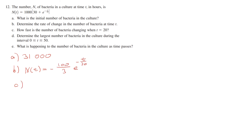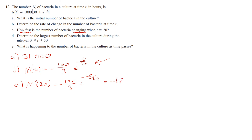For part c, how fast is the number of bacteria changing when t equals 20? Using the rate of change formula, plug in t equals 20: N prime of 20 equals negative 100 over 3 times e to the power of (negative 20 over 30), which is the same as e to the power of (negative 2 over 3). Entering this into a calculator gives approximately negative 17 bacteria per hour.